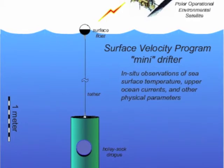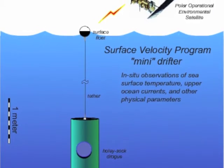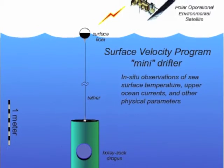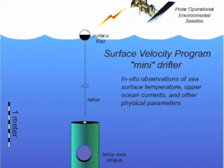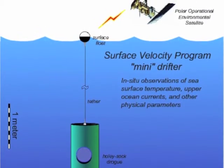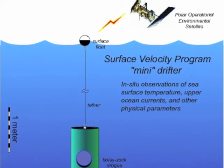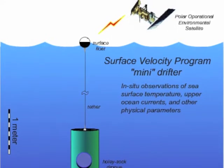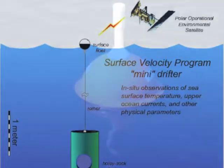The data — the position and the temperature — are transmitted via satellite to land stations, where we receive them in near real time, typically with less than an hour's delay.